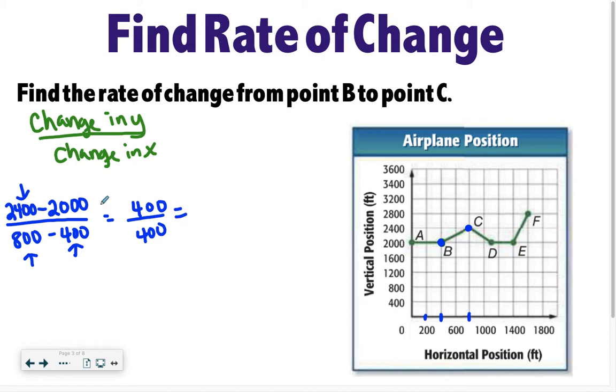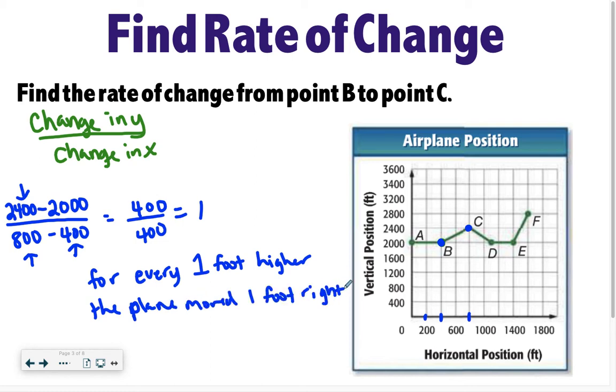So moving on. It changed 400 feet. It got 400 feet higher and it moved 400 feet horizontally. What's 400 divided by 400? That is just one. Any number divided by itself is one. But what does that mean? That means for every foot higher, the plane moved one foot horizontally. So for every one foot higher, the plane moved one foot horizontally. So this is always your up and down, and this is always your left and right in this problem.